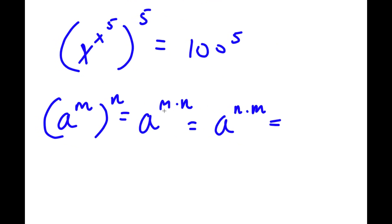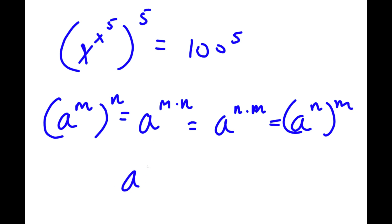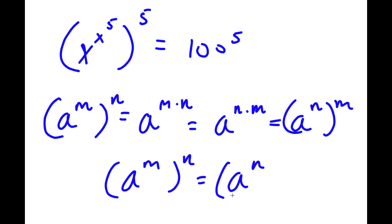If I have something in the form a to the power of m times n, we can write that as a to the power of m to the power of n. This means I can write a to the power of n times m as a to the power of n to the power of m. So in simpler terms, a to the power of m to the power of n is equal to a to the power of n to the power of m.